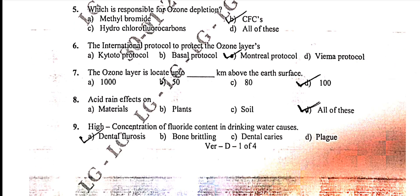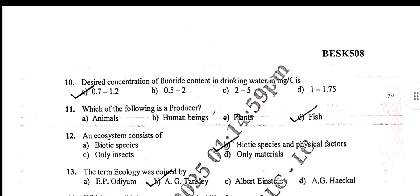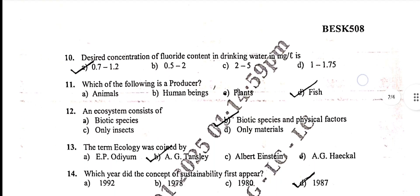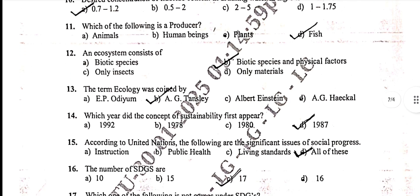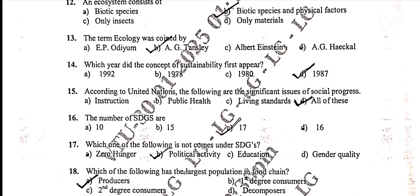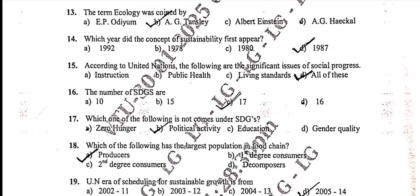Seventh one: 100. Eighth one: all of the above. Ninth one: dental fluorosis. Tenth one: 0.72 to 1.2. Eleventh: which of the following is a producer — fish. Twelfth one: biotic spaces and physical factors. Thirteenth one: AG Tansley. Fourteenth one: 1987. Fifteenth: all of these.